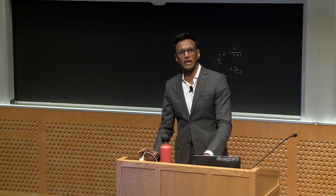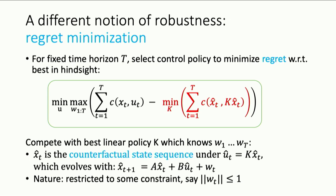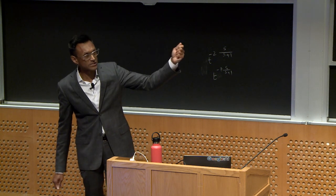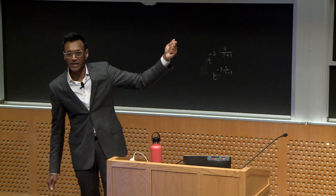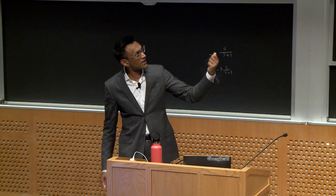Here we're going to consider the w_t's as being bounded uniformly — at every time t, w_t is bounded — but we're still going to be min-max in that, in the worst case, we'd like this regret to be bounded. Let's compare these two notions. The H-infinity notion tries to say our cost is small on the sequence subject to some constraint on nature. Now this low-regret notion, there's a sense in which it's more like an instance-wise optimal worst-case notion: on the instance we happen to see, we'd like our cost to be close to the best linear policy's cost.